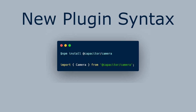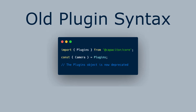In order to update to the new plugins, you simply install the plugin package and then change the import from the old syntax to the new syntax. In Capacitor 3, the use of the plugins object is deprecated.